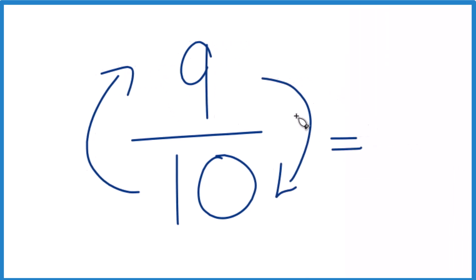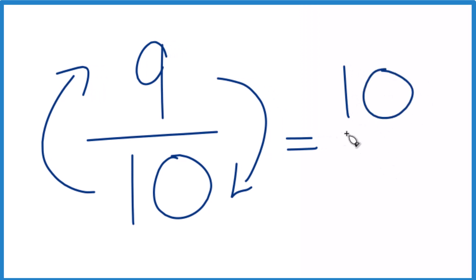So for 9 tenths, we have 10, that's our new numerator, and 9, that becomes the denominator. So the reciprocal for 9 tenths is 10 ninths.